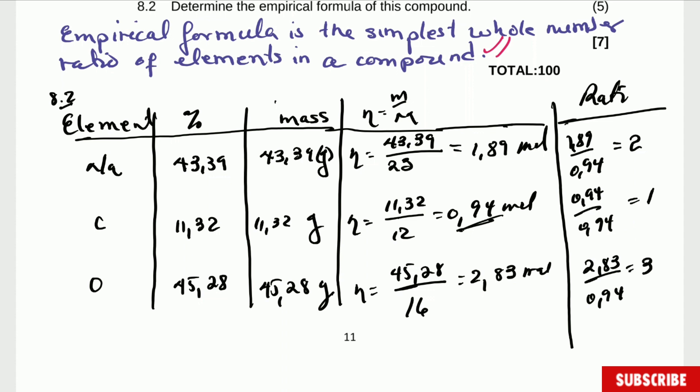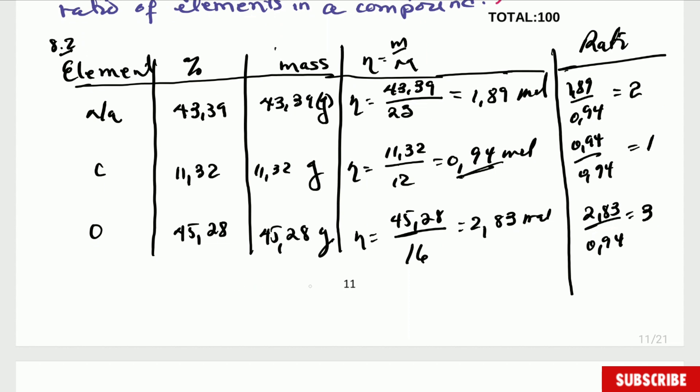And we are practically done. What is the empirical formula of this compound? It's going to be Na2CO3. This is the empirical formula of that compound. Quite simple.